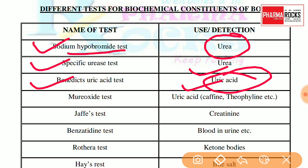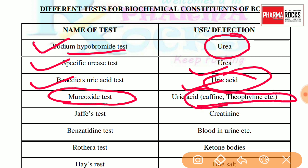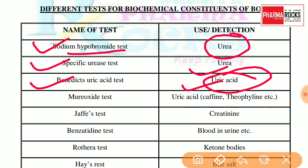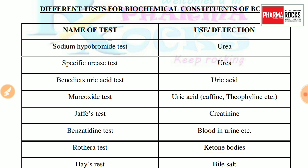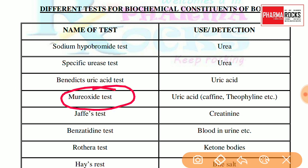Benedict's uric acid test is for uric acid. Then, the murexide test — ये important है — murexide test is for uric acid, caffeine, and theophylline. ये question बहुत बार पुछा गया है: murexide test is performed for caffeine and theophylline.